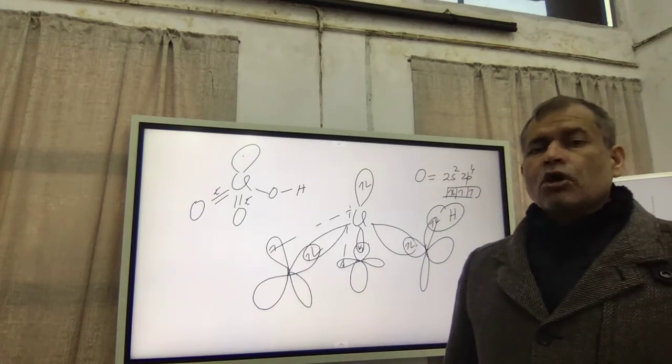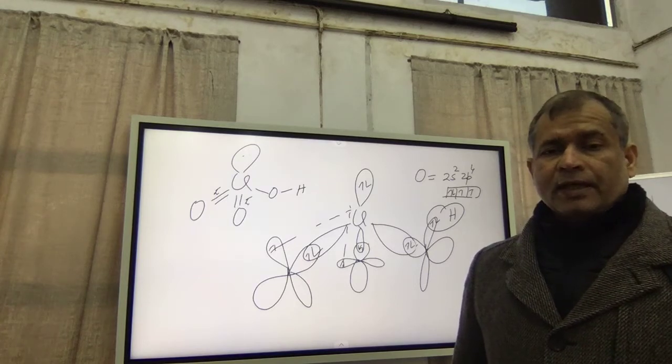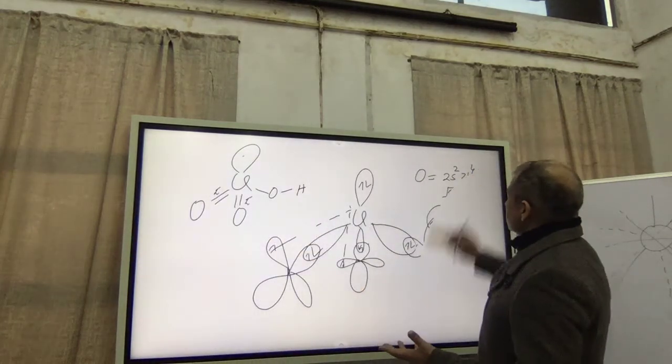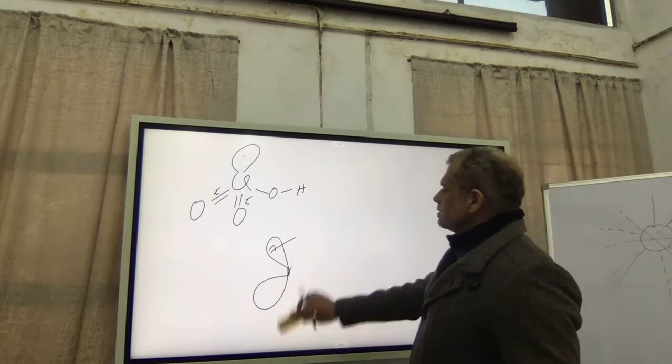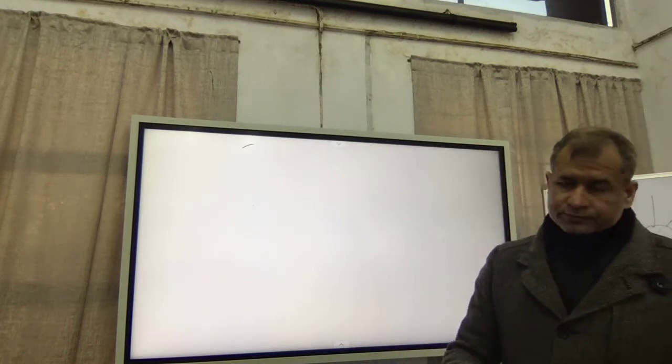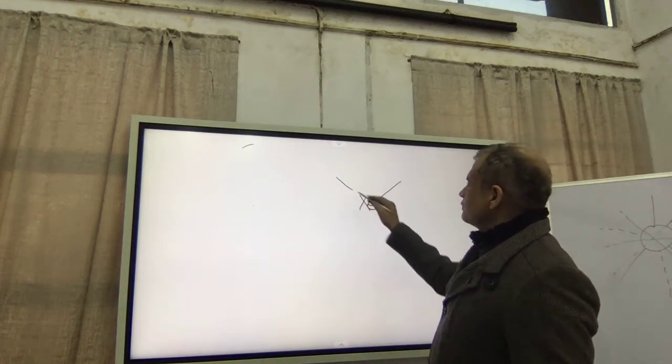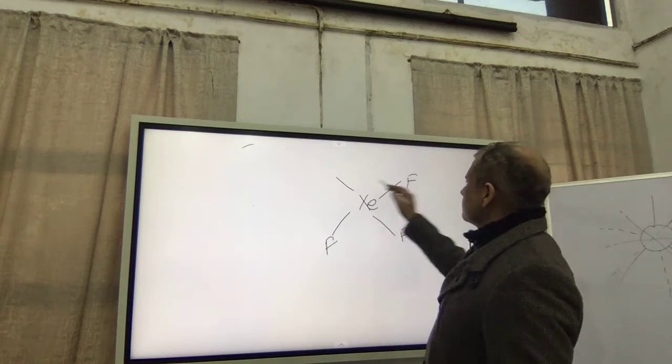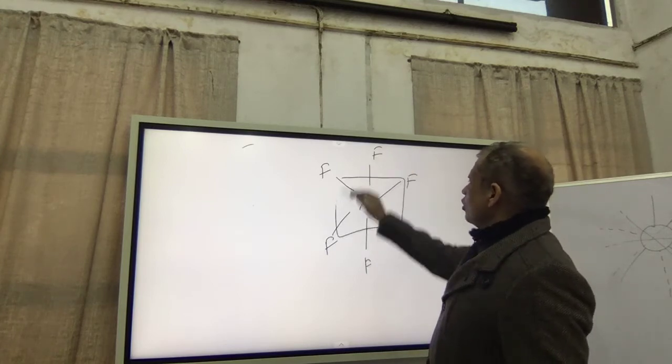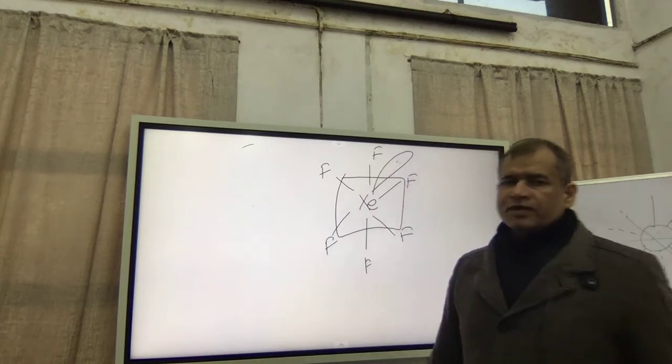But one more thing, you have to write that XeF6 also exists as a distorted octahedral. And even if your theory and formula doesn't indicate it, the fact is that in chemistry, an experimental science, it is found in both the geometries. And the lone pair is peeping out from one of the faces of the octahedral.